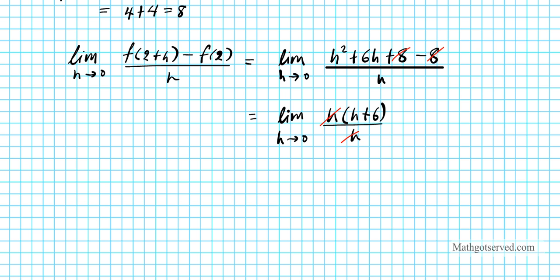So this now becomes the limit as h approaches 0 of h plus 6. Now we simply plug in 0 for the h, and we're going to have 0 plus 6, and that equals 6. There goes your final answer.